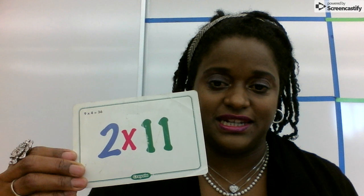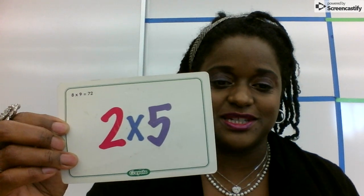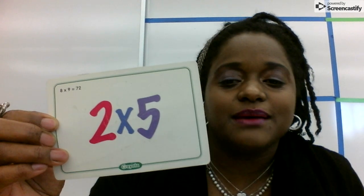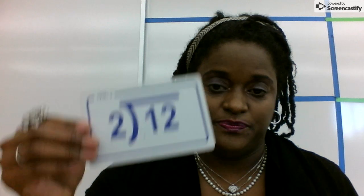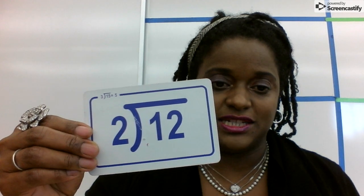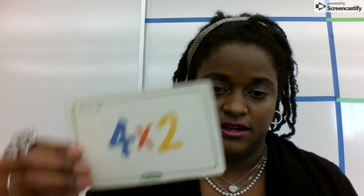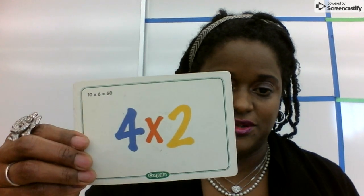2 times 11, 22. 2 times 5, 10. 12 divided by 2, 6. 4 times 2, 8. 2 times 2, 4. 8 times 2, 16. 9 times 2, 18.